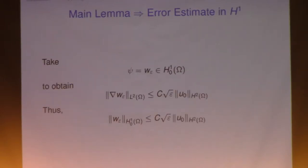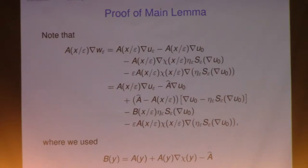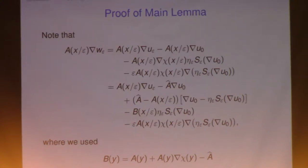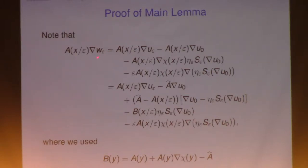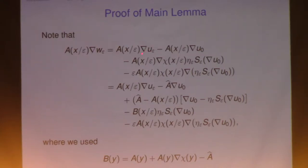So now let's see how we prove this lemma. There are some calculations I'm going to show you on the board. You take W_ε and you take the gradient — there are three terms in W_ε. You take the gradient of each term. This is the first term, second term, and the third term is the product.